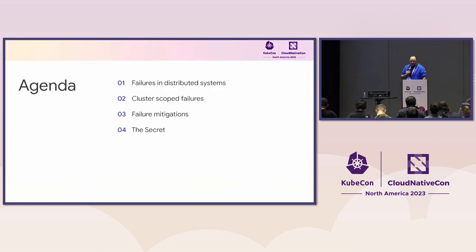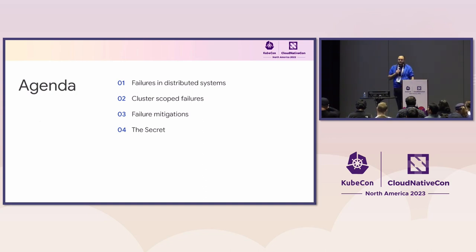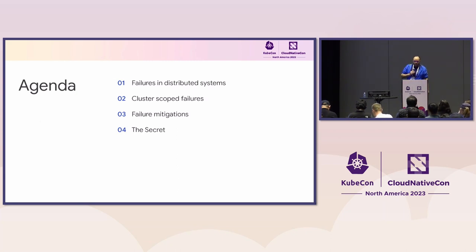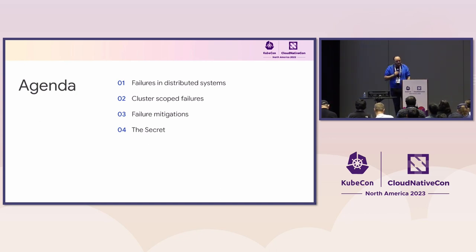Today I wanted to share some of my experiences and my view on reliability of etcd that I have seen personally in production. The agenda is to look at some simple cases of failures in distributed systems, focusing especially on cluster scope failures, which in my experience are the biggest reason of failures. I'll propose a couple of mitigations and finish maybe with the secret — maybe some people already know it.